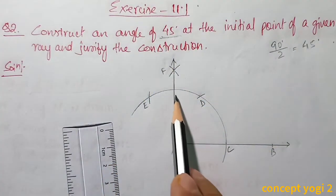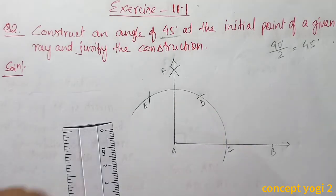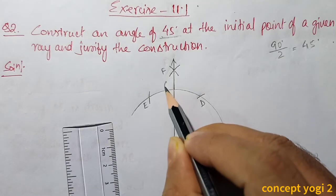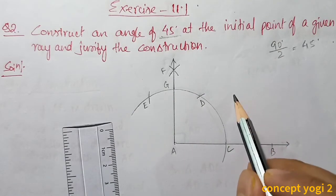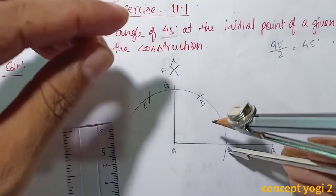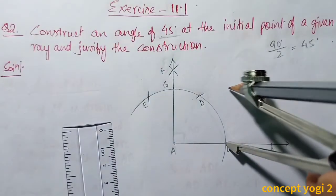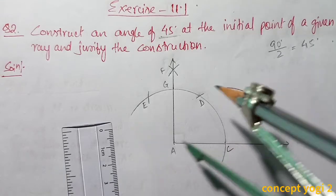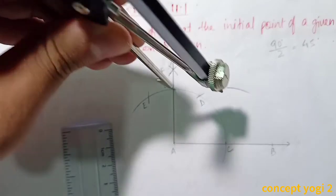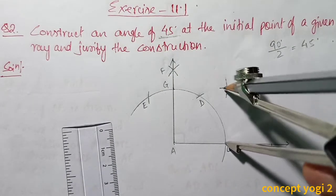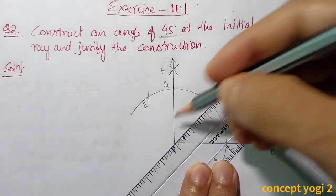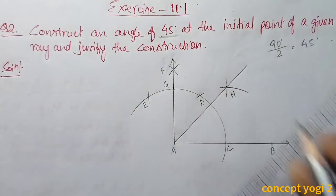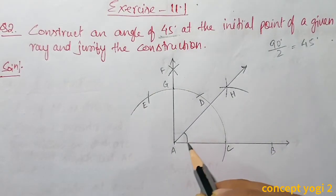But in the question we are asked to draw 45 degrees, so we need to bisect this 90 degree angle. Say a point on AF is G. Place the compass at G and C, take radius more than half, and draw two arcs that must intersect. Place the compass at C, take radius more than half, draw one arc. Then with the same radius place the compass at G and draw another arc. The two arcs intersect at point H. Join A and H — this gives us 45 degrees.